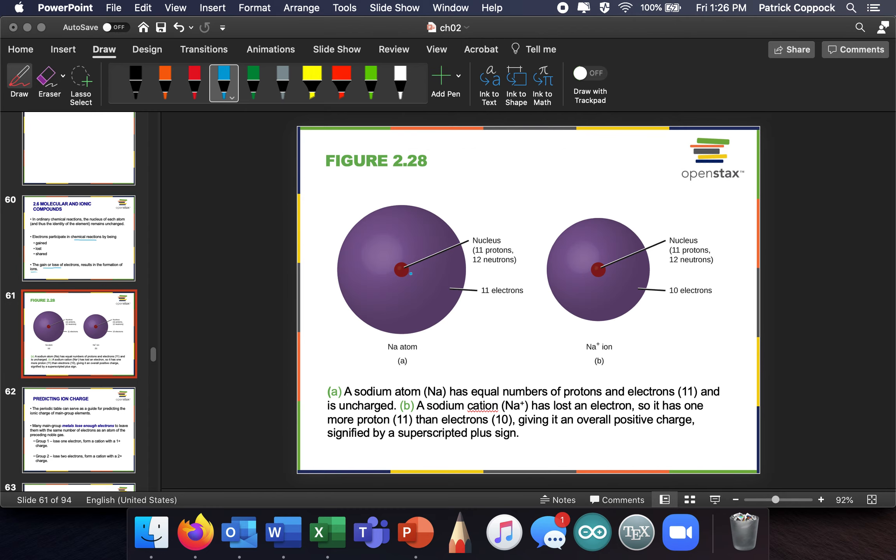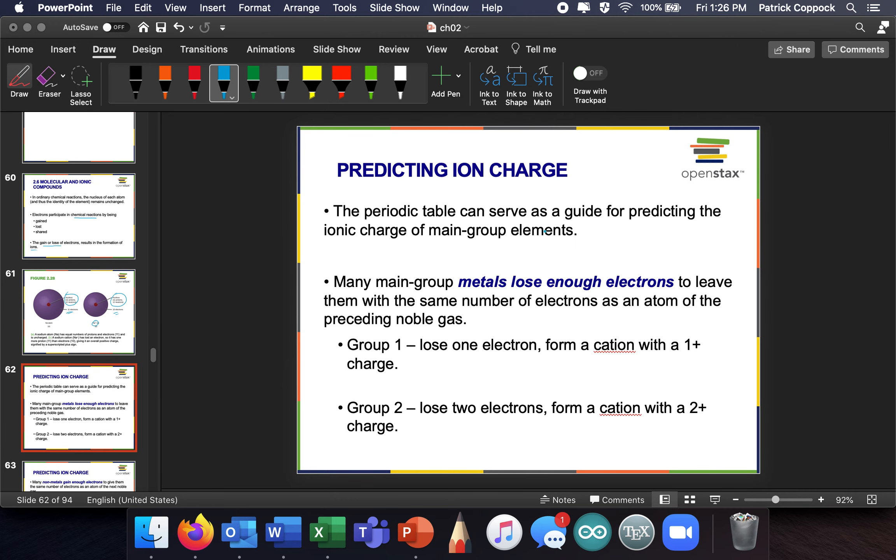So a sodium atom, for example, might look like this, where it has 11 protons because it's sodium. This is also a sodium that has 11 protons, electrons, but a sodium atom has 11 electrons, and a sodium ion, if it's plus, has got 10 electrons. It's got fewer. Why? Because it donated its electron to somebody or something.